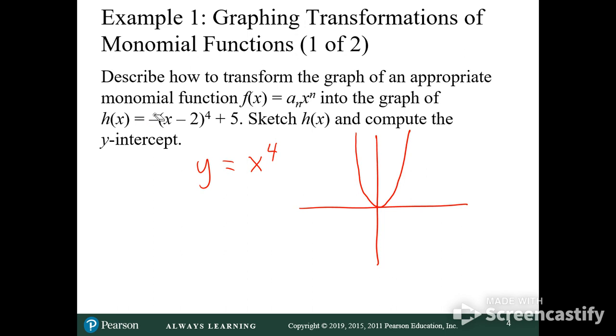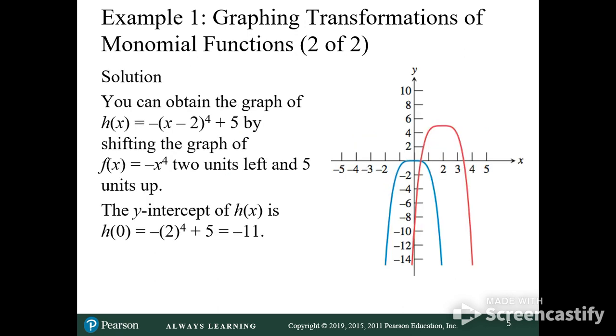So, what does the negative do to it? Flips it upside down. What does the minus 2 and the plus 5 do to it? Right 2 up 5. So, it should somewhere look like that as a final answer. So, you'll have to know how that all works. We've been doing that for the last few class periods. So, you should have an idea of what we're doing. And so, yep, it looks like that. See how it's a little flatter when it's x to the fourth.